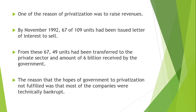In November 1992, 67 out of 109 units were given letters of interest. Out of those 67, 49 units were transferred to the private sector, and approximately 6 billion in amount came into the government's account. However, the government's hope to privatize at the desired pace was not fulfilled. The main reason was that many companies were already bankrupt, and investors — mainly foreign investors at that time — did not want to invest in those bankrupt companies.